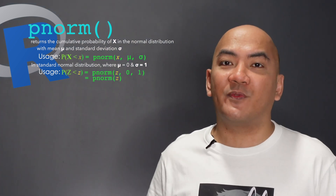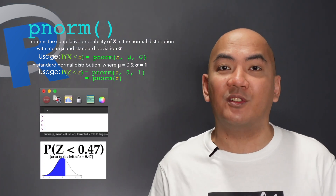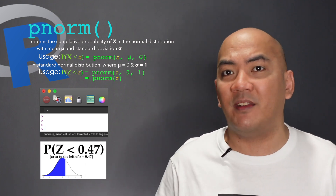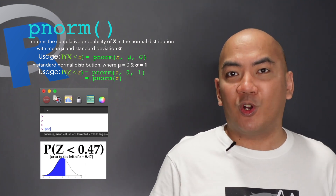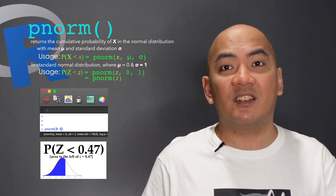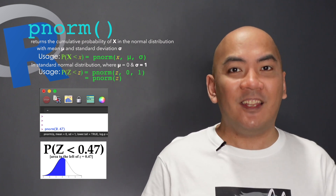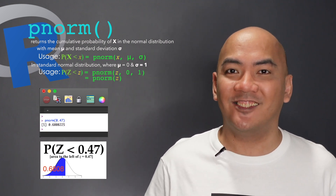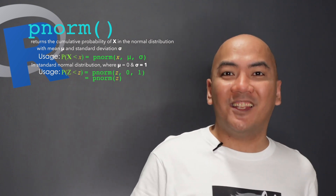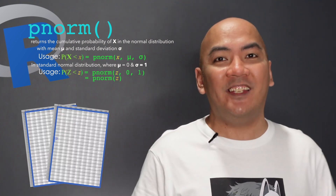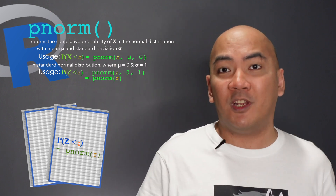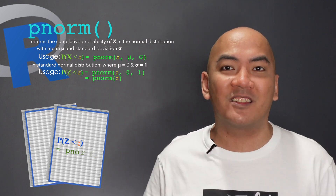So if you're asked to find the probability that the standard random variable Z is less than, say, 0.47, just type pnorm(0.47) and press the Enter key. Note that the pnorm function is like finding the cumulative probability in the table of cumulative probabilities in the standard normal distribution.